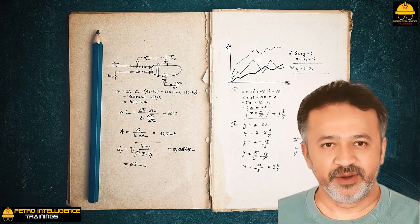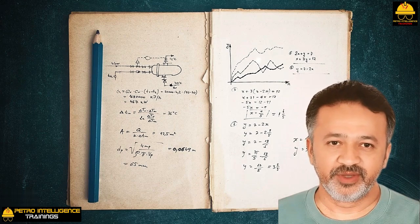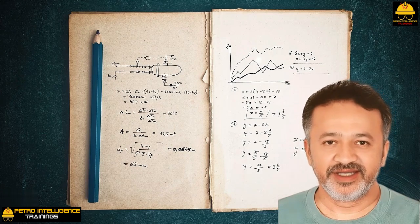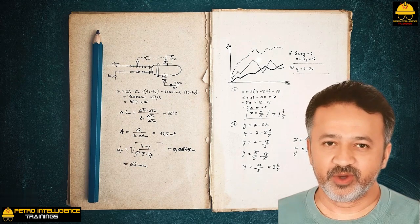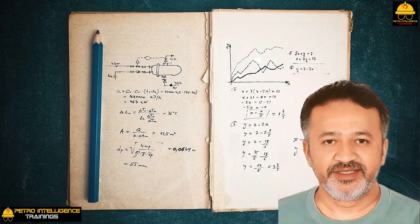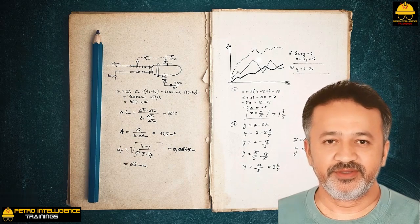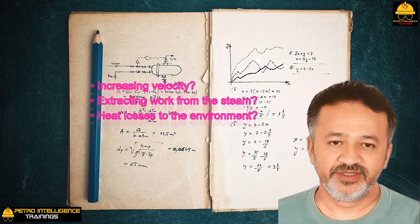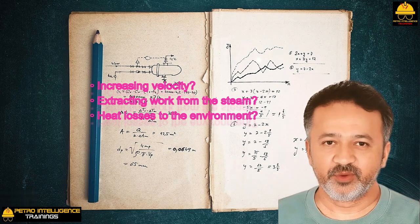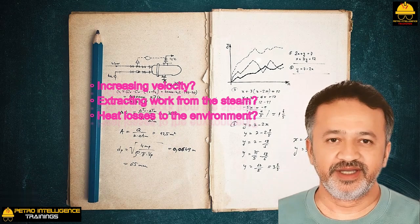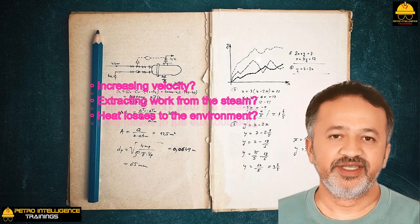Cooling of steam on expansion: When steam is reduced in pressure while maintaining a constant velocity, its flowing temperature goes down. How can the steam temperature go down without increasing velocity, extracting work from the steam, or heat losses to the environment?